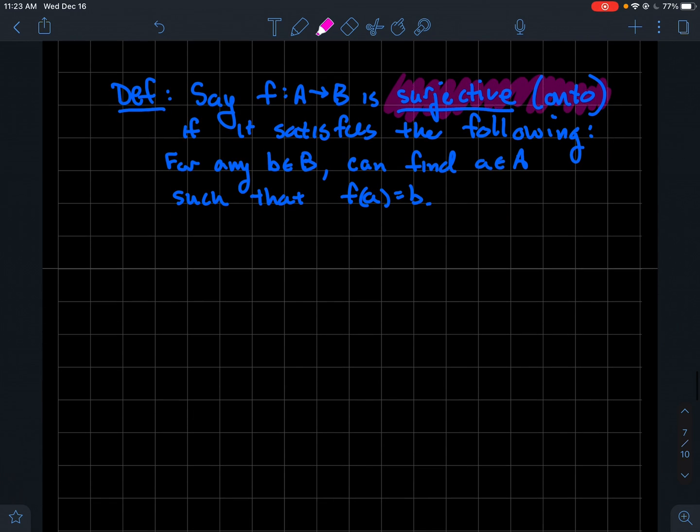All right. The next concept. We'll say that a function from A to B is surjective. And another word for surjective is onto. It satisfies the following. So here is maybe the criteria that you're going to check for any b, little b, in capital B. So here, capital B is the codomain. If you remember from the previous video about functions, the codomain is not all the outputs. The codomain contains all the outputs of the function, but I'm not saying everything in B is an output.